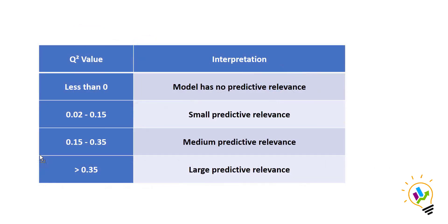If we get a Q² value less than zero, the model has no predictive relevance. If the value is between 0.02 and 0.15, it indicates small predictive relevance. Between 0.15 and 0.35 means medium predictive relevance, and if the Q² value is greater than 0.35, that indicates large predictive relevance.